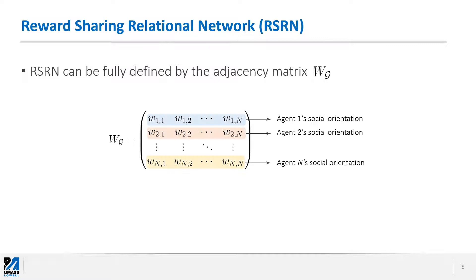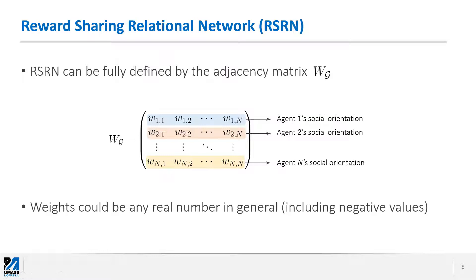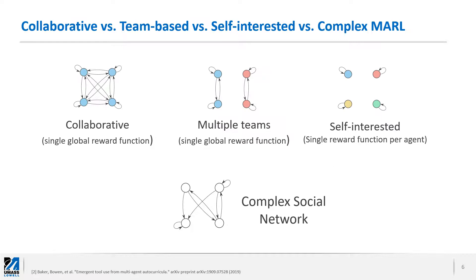Each row of this matrix determines the social orientation of each agent in the network. The identity matrix, for example, corresponds to a self-interested society. All ones, or any other positive constant, would represent a fully collaborative society. The weights can be any real number, including negative values which indicate hostile relationships. In this work, however, we use only zeros and ones for the weights.